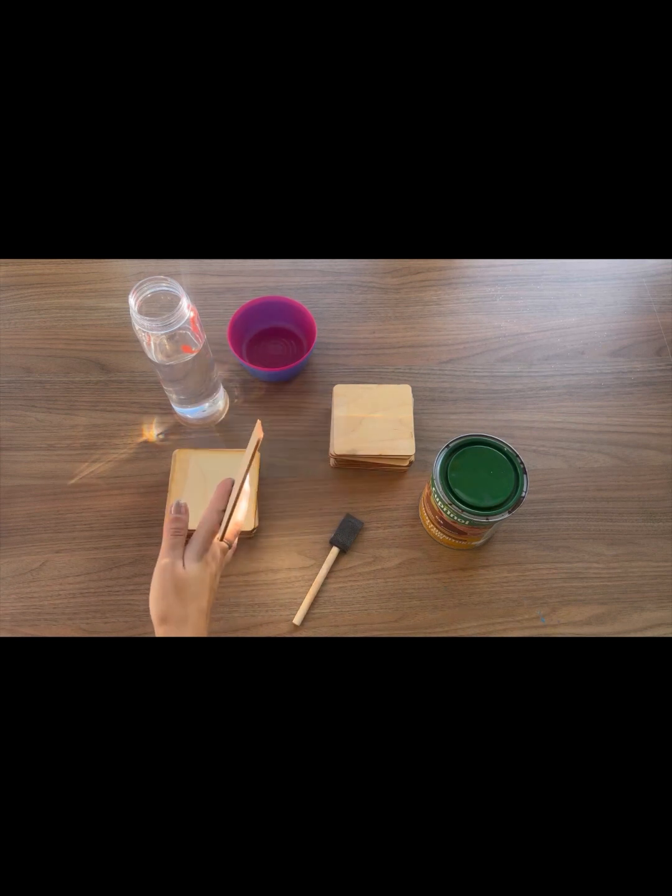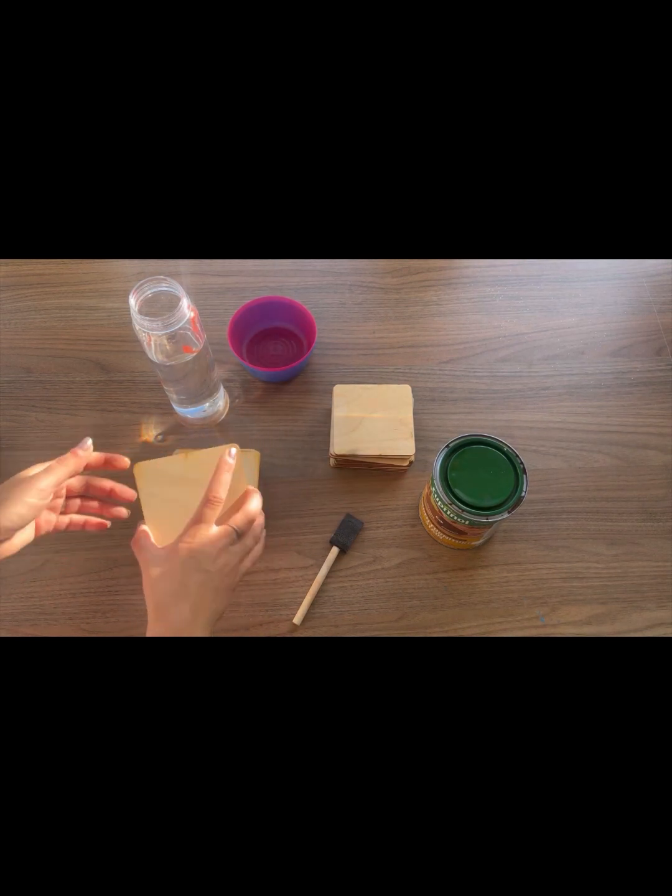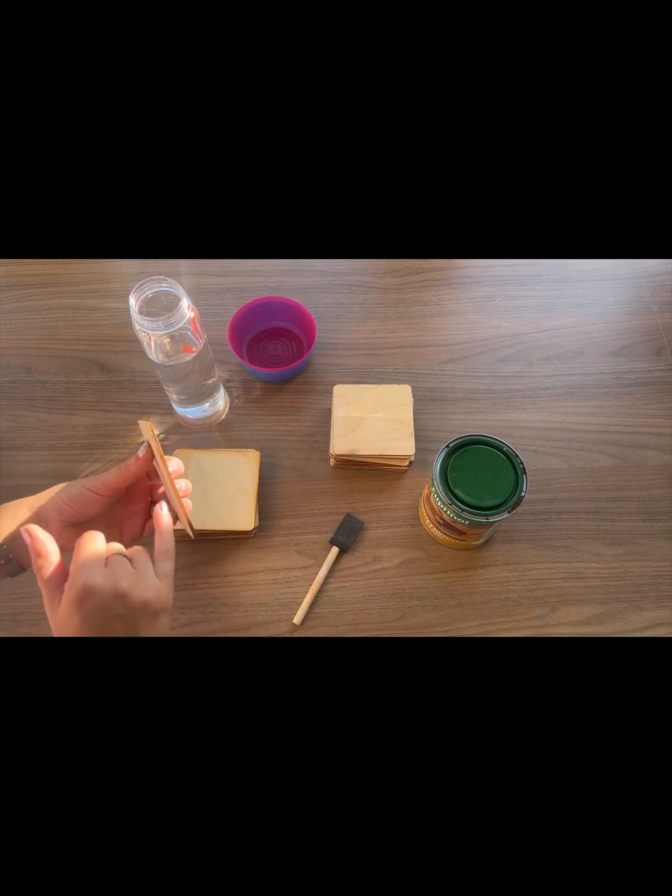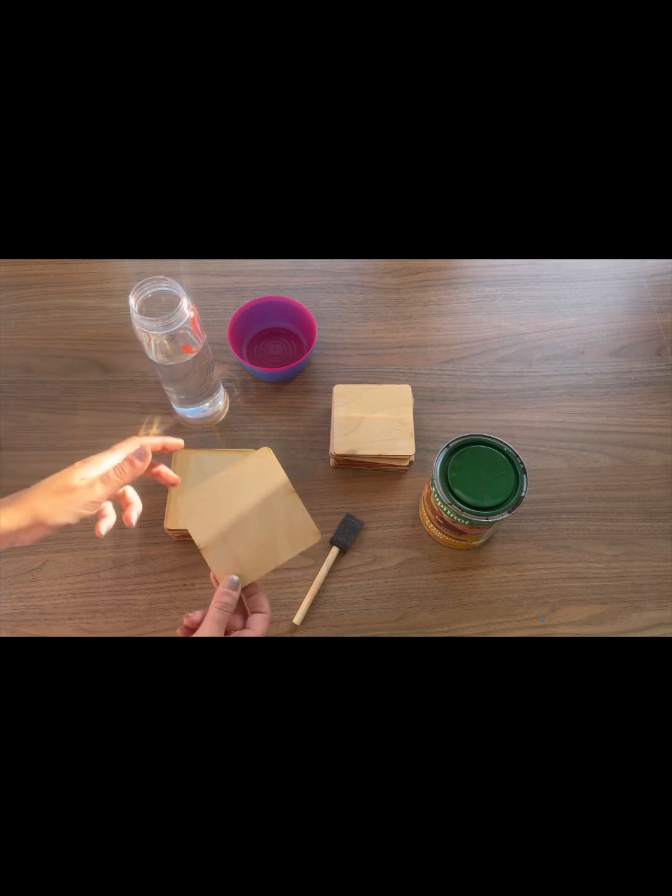Once you've worked out your design, you'll need to get the amount of wooden squares that you need. These ones I've bought are 12.5 centimeters by 12.5 centimeters and they are three mil ply board. I bought these from craftshapes.co.uk.